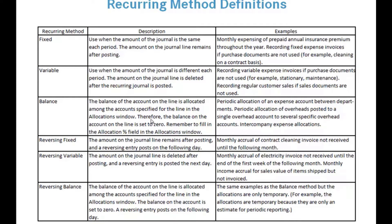The Balance type takes the balance of an account at the time you post it, zeros it out, and allocates the expense to all the other accounts you've set up. Reversing Fixed, Reversing Variable, and Reversing Balance work the same as the top three, except you must post them on the last day of the month. Because they're configured as reversing entries, the system will reverse the entry on the first day of the following month — useful for accruals where you don't have the invoice yet.